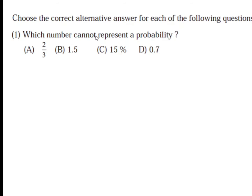The first question is: which number cannot represent a probability? Options are 2/3, 1.5, 15%, or 0.7. We have to decide amongst these four which cannot represent the probability. For this we use the property that the probability of any event is in between 0 and 1.